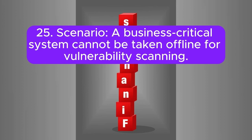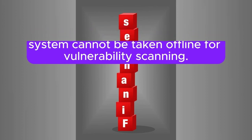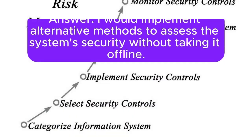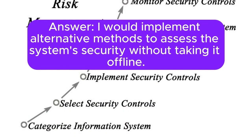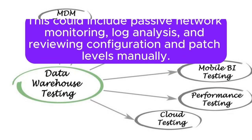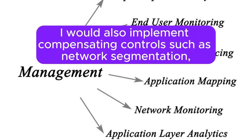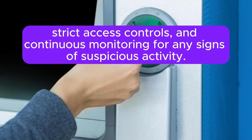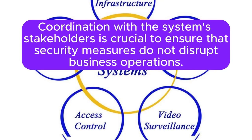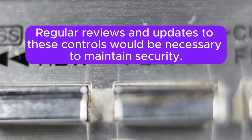Scenario 25: A business-critical system cannot be taken offline for vulnerability scanning. How do you ensure its security? I would implement alternative methods to assess the system's security without taking it offline, which could include passive network monitoring, log analysis, and reviewing configuration and patch levels manually. I would also implement compensating controls such as network segmentation, strict access controls, and continuous monitoring for any signs of suspicious activity. Coordination with the system's stakeholders is crucial to ensure that security measures do not disrupt business operations. Regular reviews and updates to these controls would be necessary to maintain security.